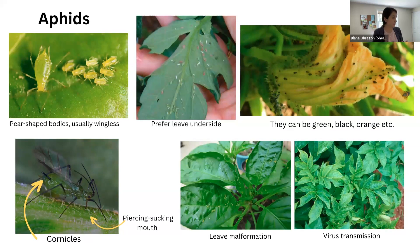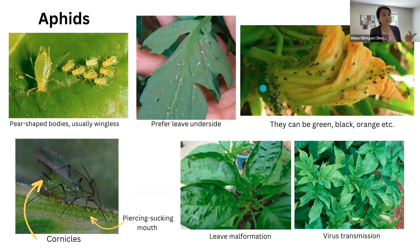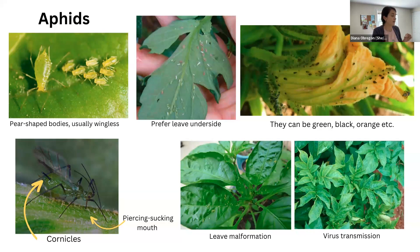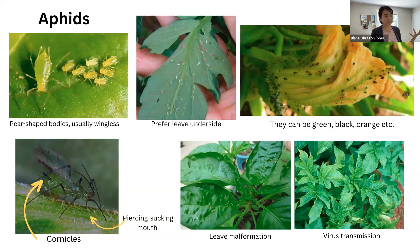Aphids in particular are pear-shaped and usually wingless. They like to be on the underside of leaves, so you might not see them until there are many. They can be green, black, orange, or red. One distinct morphological feature is that they have cornicles — two tiny structures at the end of their abdomen. Scientists aren't in full consensus on what they're used for, but it seems they produce volatiles to repel parasitoids as a defense mechanism. It's a good feature to identify aphids. If you see a pear-shaped insect with two tiny horn-like structures at the back, they could be aphids.